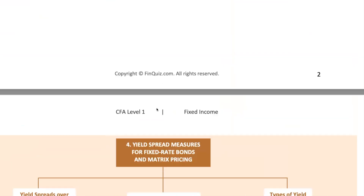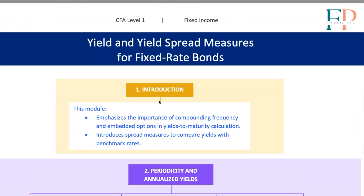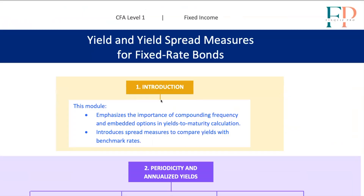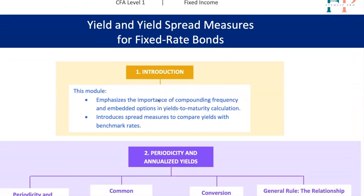And there you have it — a crash course in yield spreads for fixed-rate bonds and matrix pricing. Understanding these spreads helps you see beyond the surface, stripping out macro factors to focus on issuer-specific risks. Whether you're comparing corporate bonds to government bonds, assessing callable bonds, or looking for a good deal, knowing your spreads is key. Keep practicing, stay sharp, and soon you'll be making informed decisions like a seasoned bond trader. Until next time, keep those calculators warm and your minds even sharper.